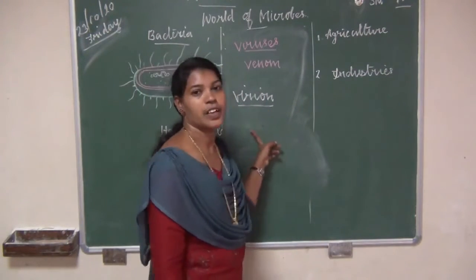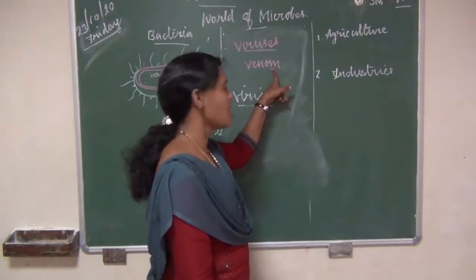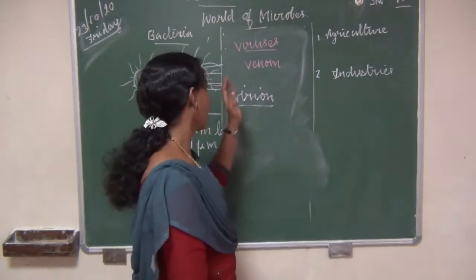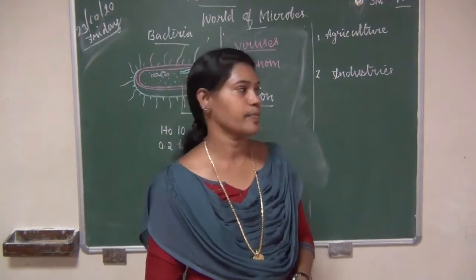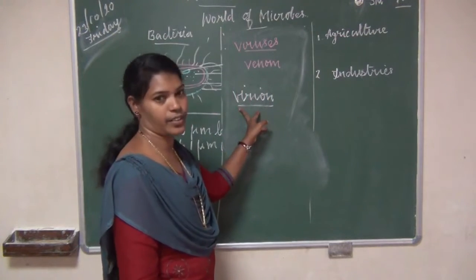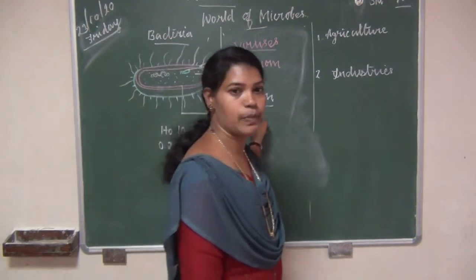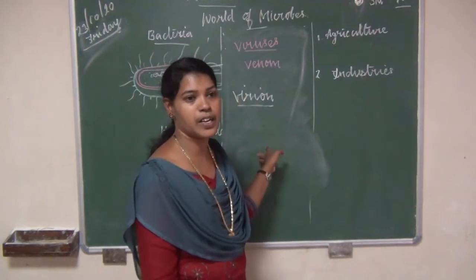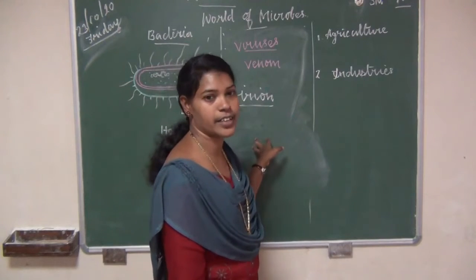Viruses: the Latin word means venom or poisonous fluid. They are acellular or self-replicating parasites. A small virus particle is called a virion. It is the smallest one, can multiply itself, and lives in animals, plants, human beings, and even bacteria.